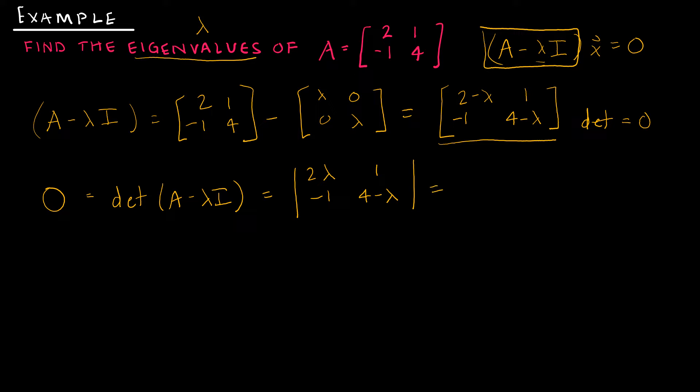This is a 2 by 2 matrix, so hopefully we recall that this one's pretty easy to determine. This would be (2-λ) times (4-λ), and subtract -1 times 1. And I'm wanting this to be equal to zero. So let's do a little bit of math. I would get 8 - 6λ + λ² and then minus negative 1 or plus 1, which gives me, if I do some rearranging, λ² - 6λ + 9.